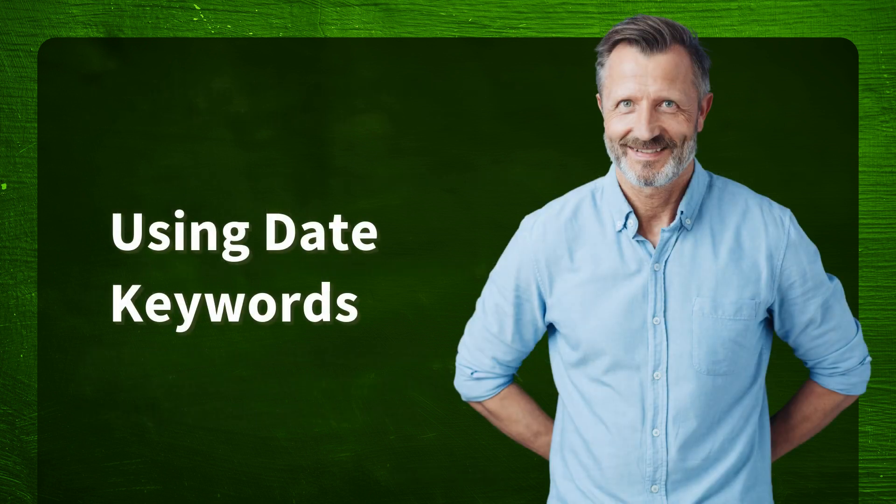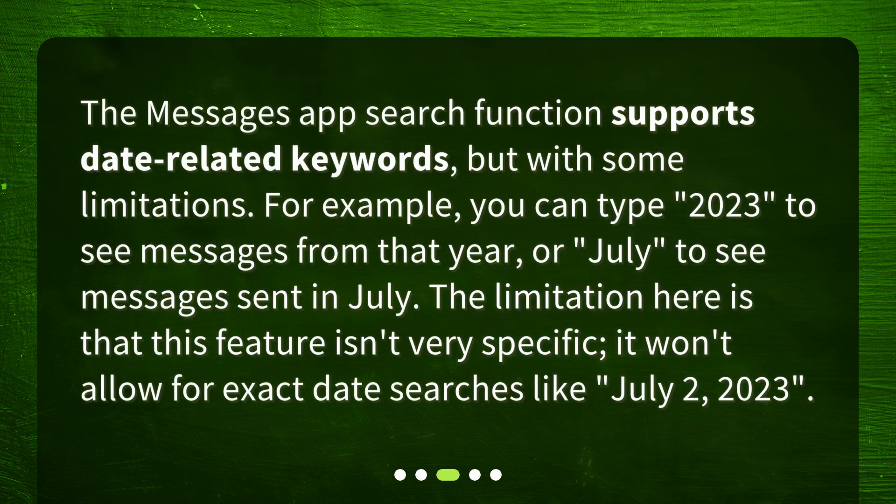Using date keywords. The Messages app search function supports date-related keywords, but with some limitations. For example, you can type '2023' to see messages from that year, or 'July' to see messages sent in July. The limitation here is that this feature isn't very specific — it won't allow for exact date searches like 'July 2, 2023'.